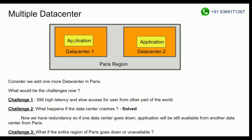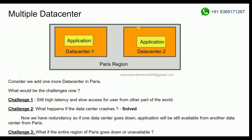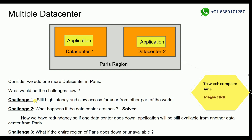In this scenario, my application is deployed in Paris. Data center 1 is deployed in Paris, and data center 2 is also deployed in this region. So for any reason, if data center 1 goes down, there won't be any downtime. My application may be down in data center 1, but still, it will be available from data center 2. So my Challenge 2 will be solved.